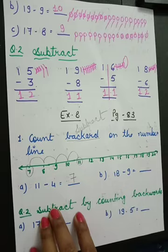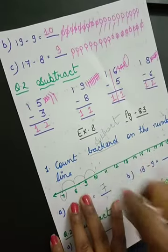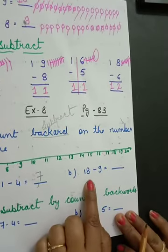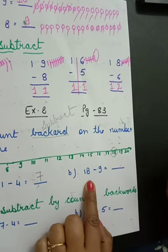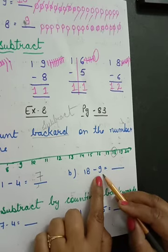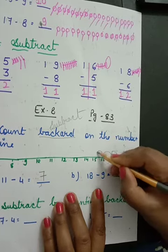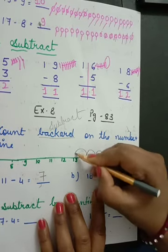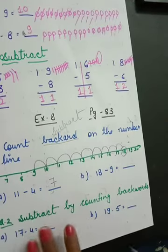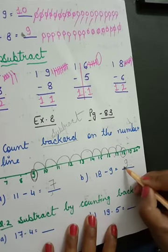Got it all of you? Now: 18 minus 9. Where is 18? Go 9 steps backward: 1, 2, 3, 4, 5, 6, 7, 8, 9. So what answer we have got? Nine. Nine. Got it all of you?